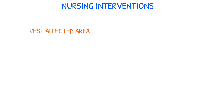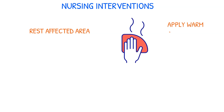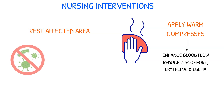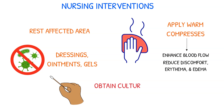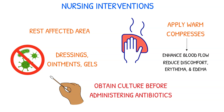Nursing interventions for cellulitis include promoting rest in the affected area and applying warm compresses as prescribed to enhance blood flow and reduce discomfort, erythema, and edema. Antibacterial dressings, ointments, or gels may also be used as prescribed to lower the risk of further infection. It is important to obtain a culture of the affected area before administering antibiotics to determine the most effective treatment course.